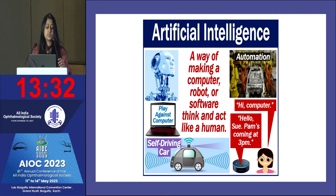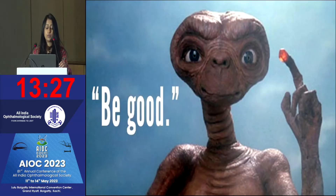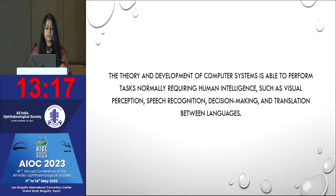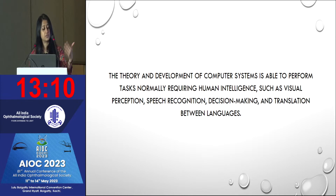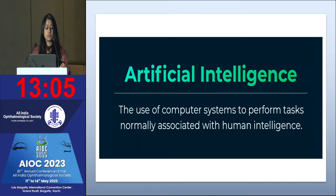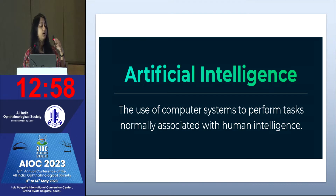Artificial intelligence is a way of making a computer, robot, or software think and act like a human. We have to make sure that we are doing good in the process — it should not be an erroneous diagnosis. The theory and development of computer systems able to perform tasks normally requiring human intelligence, such as visual perception, speech recognition, decision-making, and translation between languages.